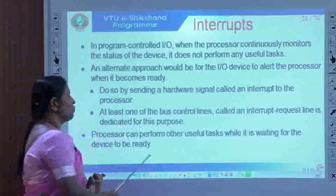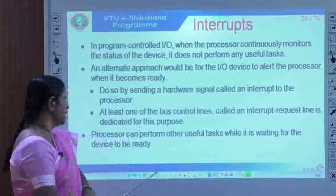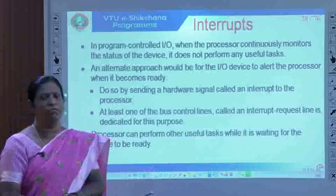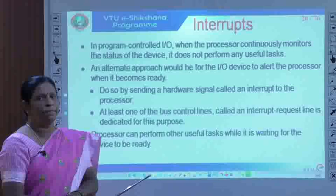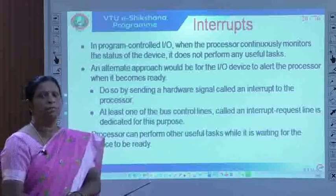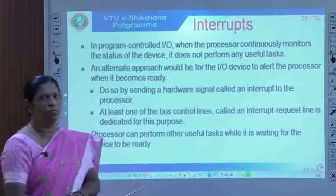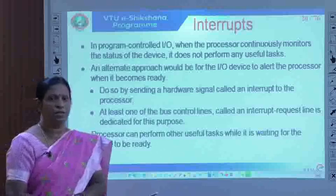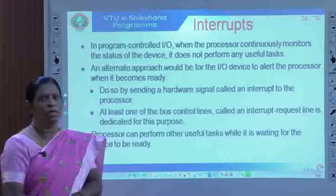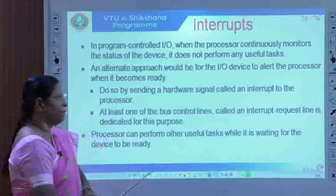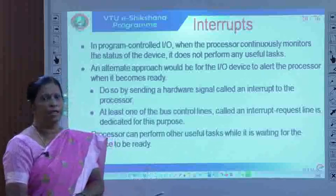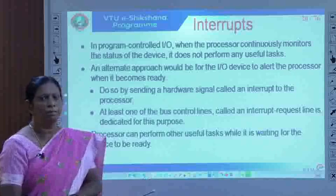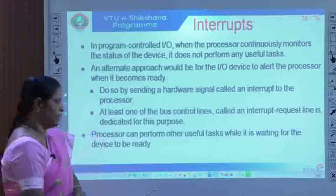At least one of the bus control lines, called the interrupt request line, is dedicated for this purpose. The processor can perform useful tasks instead of waiting for the I/O device. The I/O device informs the processor when it is ready for data transfer by sending the interrupt signal via the interrupt request line — a dedicated line over which interrupt requests are sent.